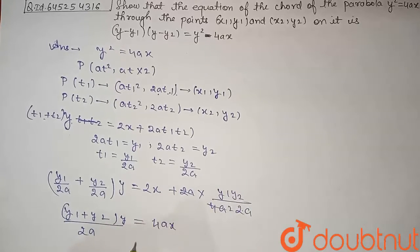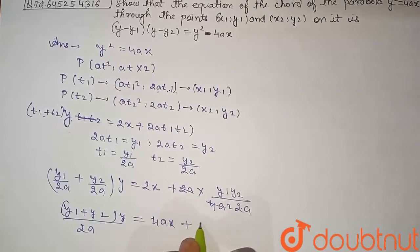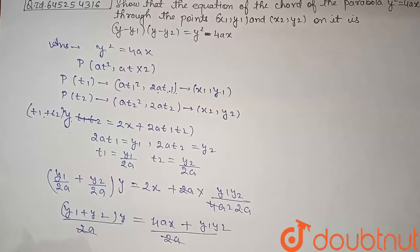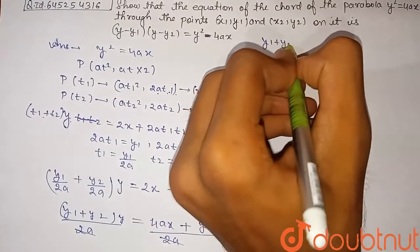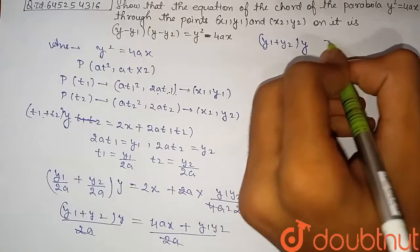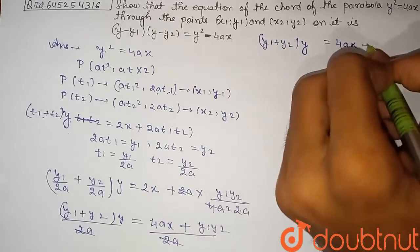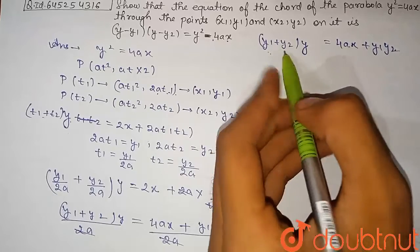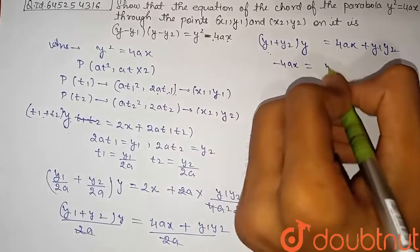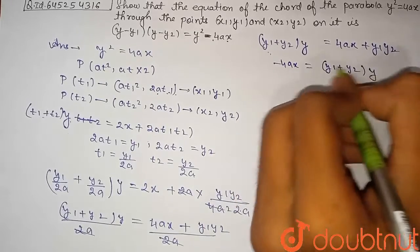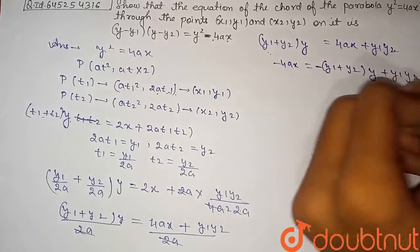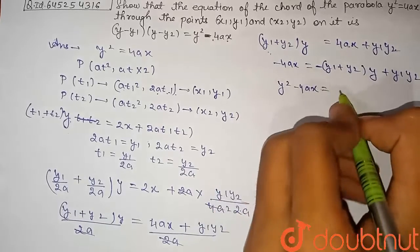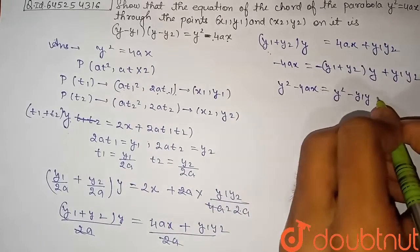Multiplying through by 2a gives y(y1 + y2) = 4ax + y1·y2. Since we need −4ax in the proof, we transfer the term: −4ax = y(y1 + y2) − y(y1+y2)... rearranging gives y²−4ax = y² − y1·y − y2·y + y1·y2, with y² added to both sides.